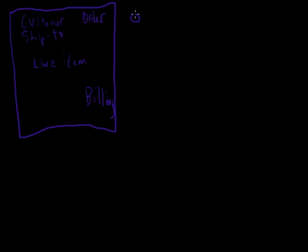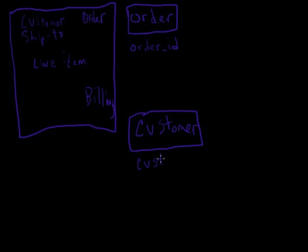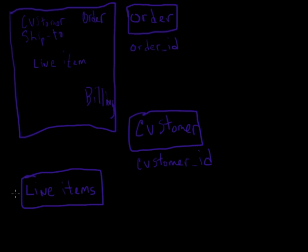If we break each one of those out into its own table, we can consider them to be entities. Let's take a look at our order information. If we define our order table, we probably want to have an order ID to uniquely identify the order. For my customer entity, we're probably going to have a unique customer ID. For my line items, I'm probably going to have a line item ID.